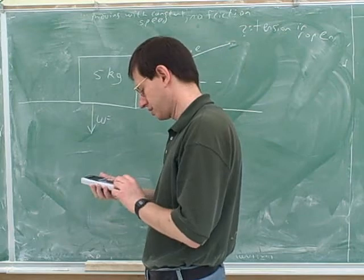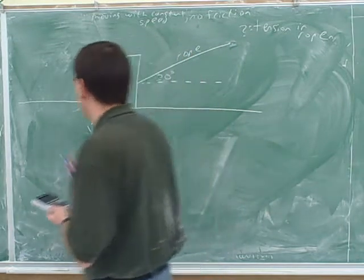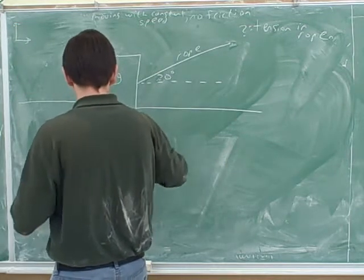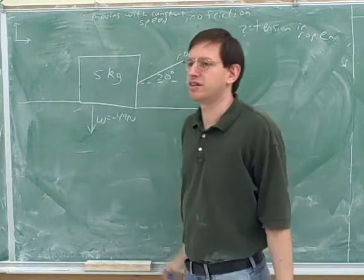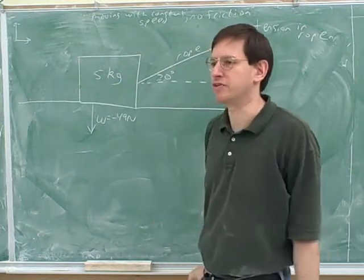How would we calculate the weight? mg. Negative if we were saying that it would be down. And if we choose these as our positive directions, that would come out to be negative 49 newtons. What are the other forces on this object besides the weight? The rope and the normal force.